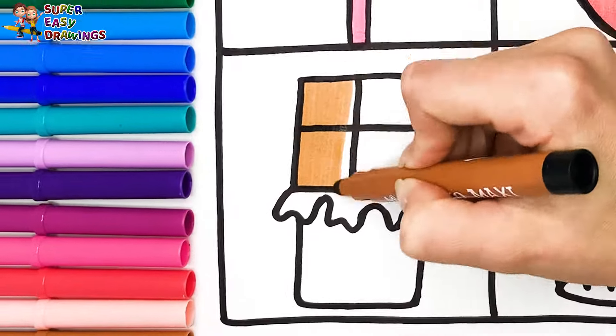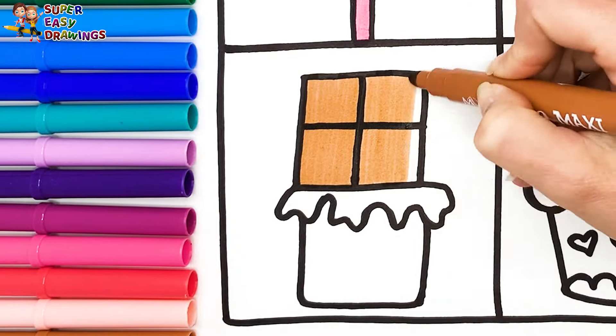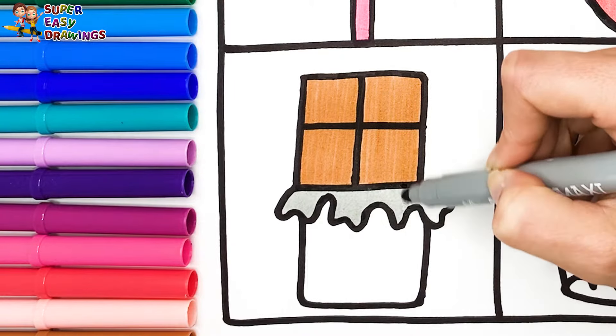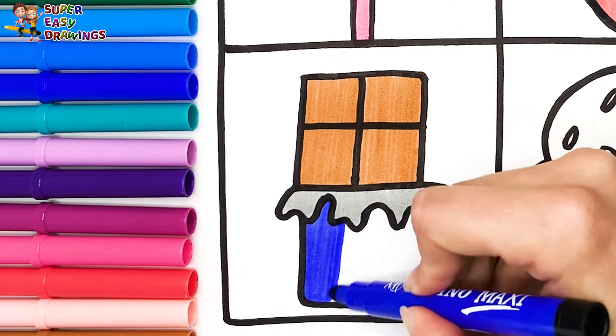I color the chocolate with this brown marker. Then I use gray here and dark blue for the packaging.